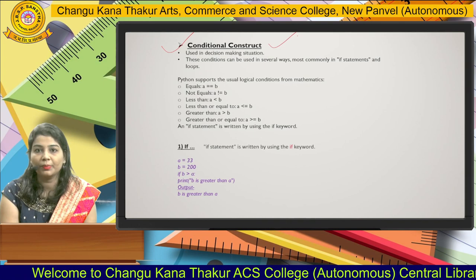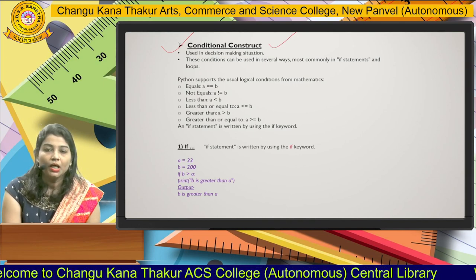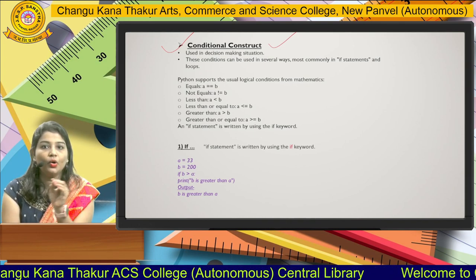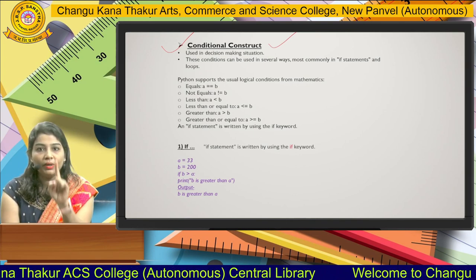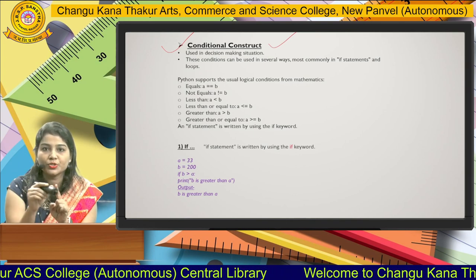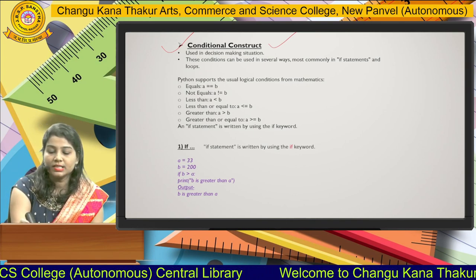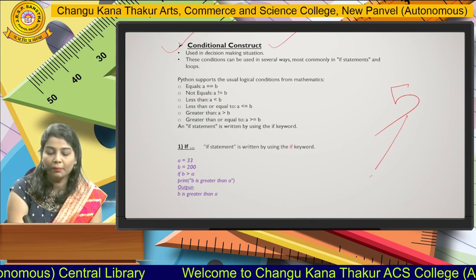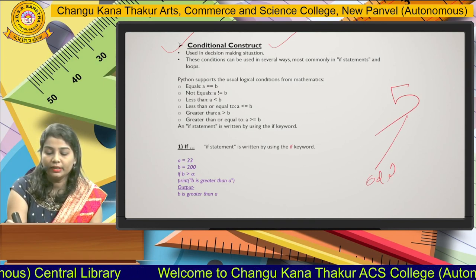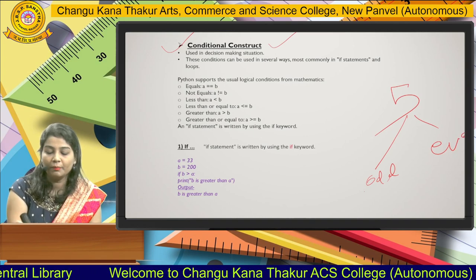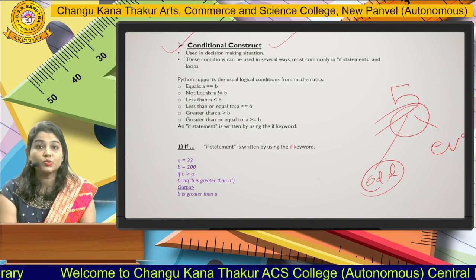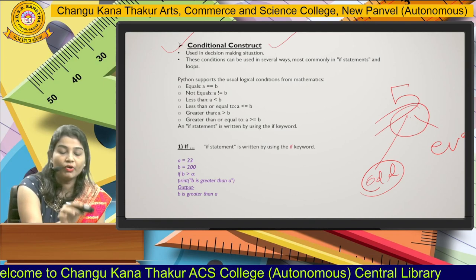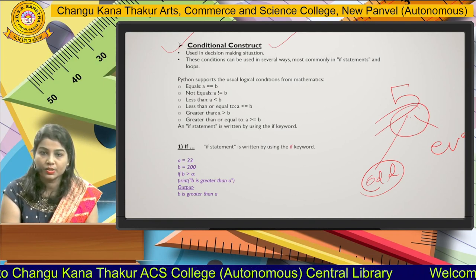For example, if you input any number, the question is whether it is an even number or an odd number. You have one number but two options — for example, consider number 5: it is either odd or even. Such a situation is called a conditional-based situation, and we use conditional constructs to handle it.